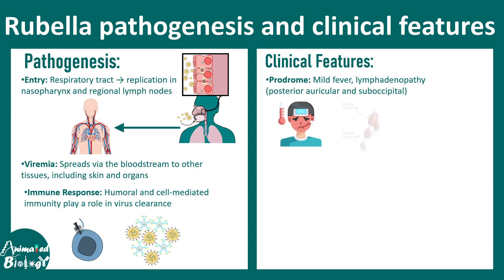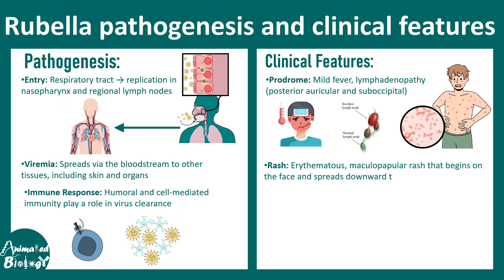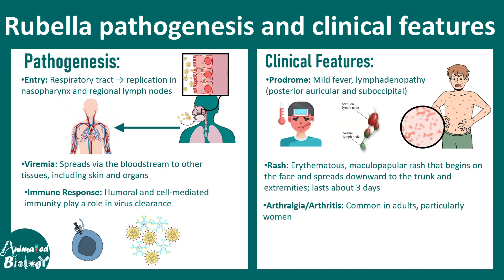In the prodromal phase there could be mild fever, lymphadenopathy — that means swelling of the lymph nodes — and eventually rashes. An erythematous maculopapular rash can occur on the face first and spread throughout the trunk and other body extremities, lasting three to four days. There could also be arthritis and mild conjunctivitis.